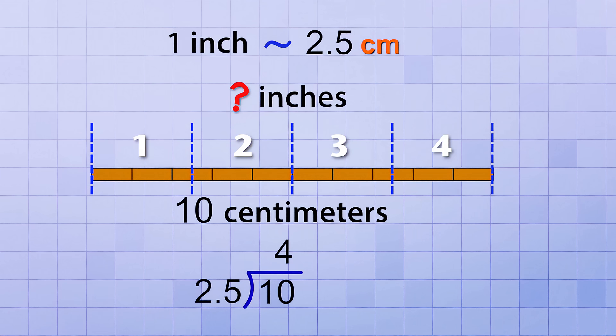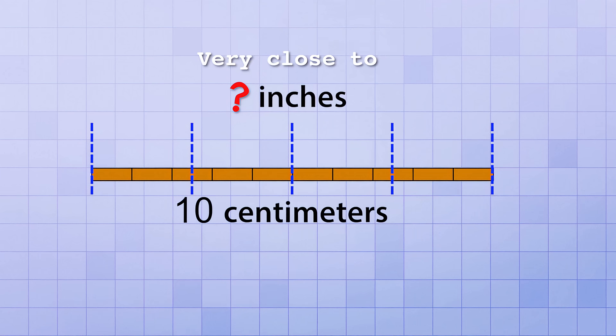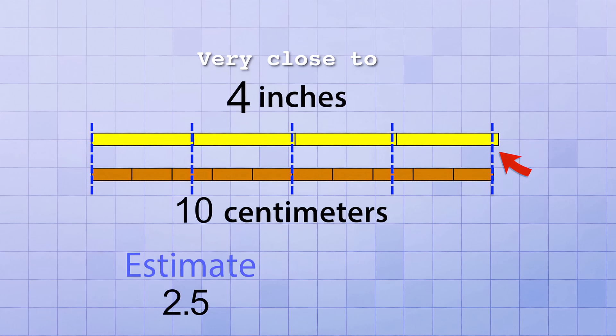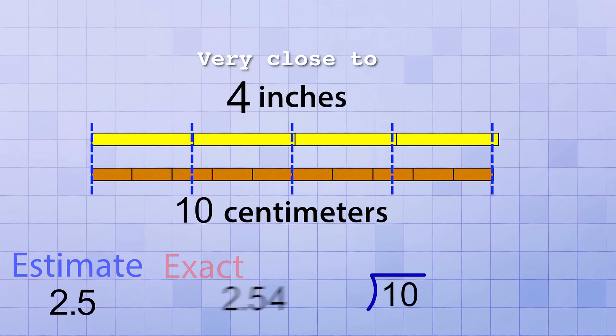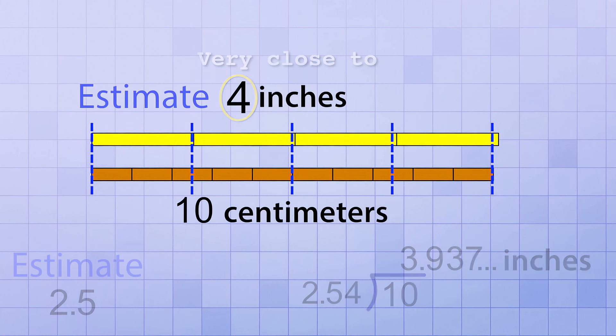That means 10 centimeters is very close to being the same as 4 inches. The reason it's only very close is because we use the estimate 2.5 centimeters per inch instead of the exact value of 2.54. If we divided 10 by 2.54 instead, we'd see that 10 centimeters is more like 3.937 inches. But 4 is a great estimate, and it's easier to remember. 10 centimeters is about 4 inches.